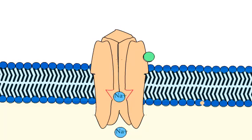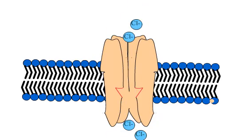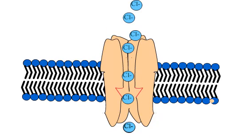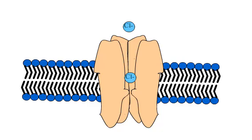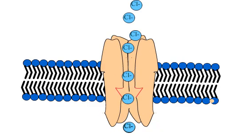For example, stimulation of the nicotinic receptor by acetylcholine results in sodium ion influx, which causes depolarization and an excitatory response. On the other hand, binding of GABA with its receptor increases chloride influx and causes hyperpolarization and an inhibitory response.